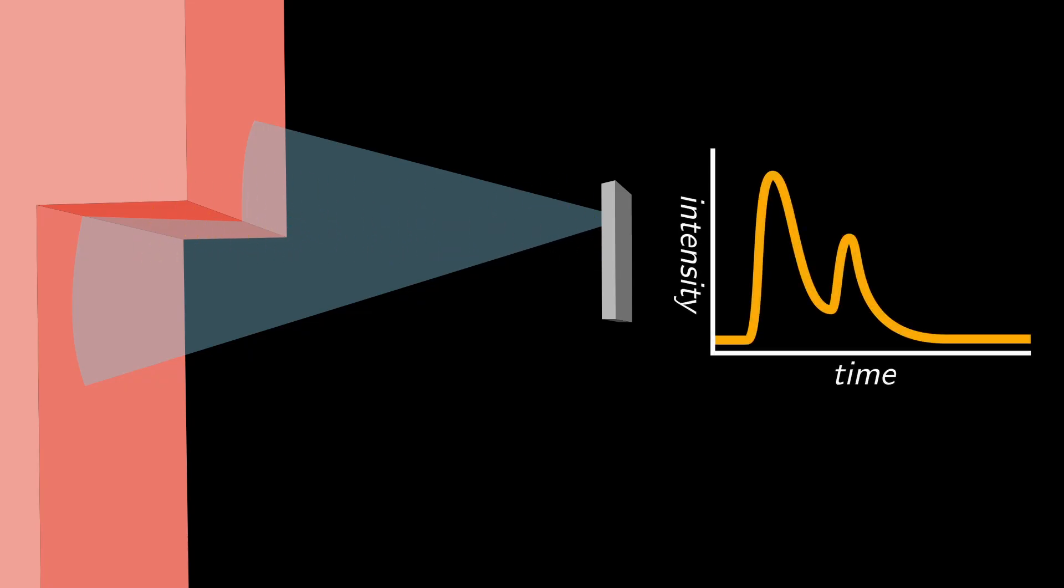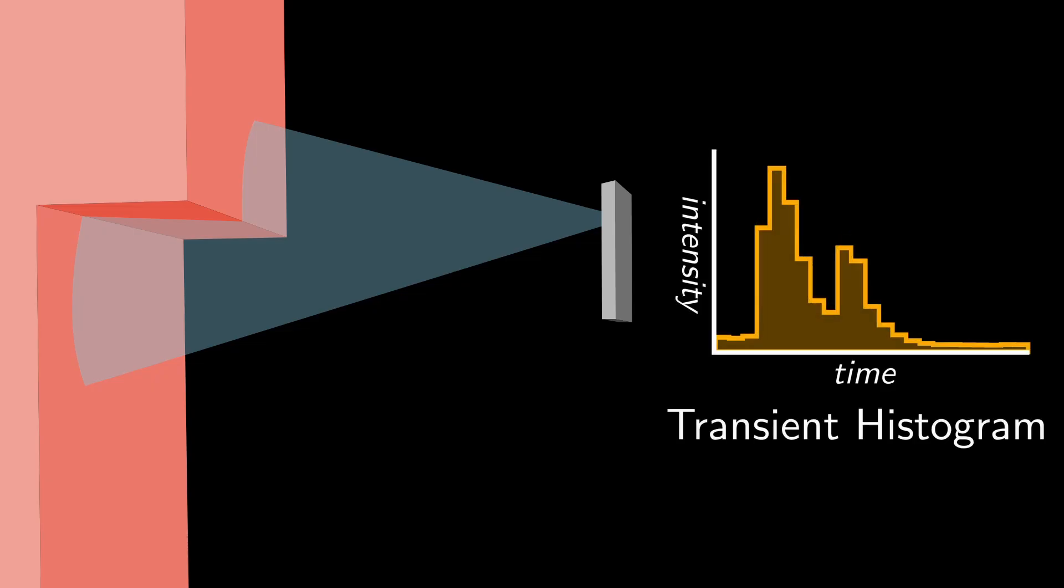However, sensors like this one actually capture more information than a single distance estimate. They operate by illuminating the scene with a pulse of light and measuring the intensity of that pulse over time as it returns back from the scene. This measured pulse is called the transient histogram.